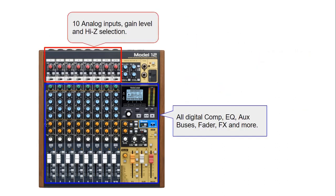Now even though the Model 12 looks like an analog mixer, it is actually a digital mixer. The only analog part of the mixer are the input gains — on screen you can see the red square, that's the analog part. Anything in the blue section is all digital. Unlike many digital mixers that use a menu system to control each channel's inputs like compression, EQ, auxiliary sends, etc., having individual knobs and sliders for each channel makes the Tascam Model 12 much easier to use.